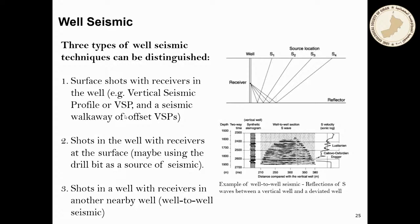We also spoke about well seismic — the ability to acquire seismic along the borehole. We can do this by placing receivers in the wellbore and shooting from the surface, or by placing sources in one well and receivers in another — what we call well-to-well seismic — which is very useful to image the area between two wells. If the spacing between receivers where we acquire the time-depth relationship is small, we can make a vertical seismic profile.